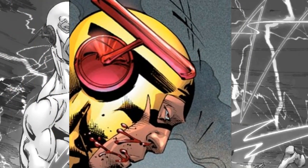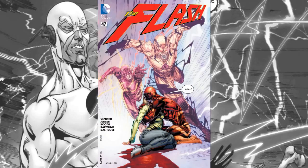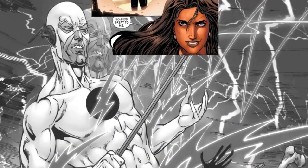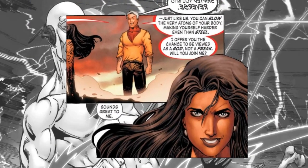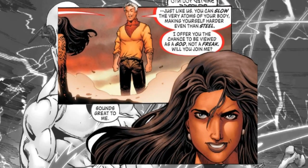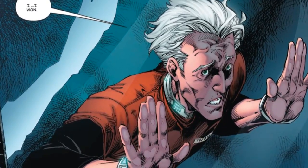After this apparent death, Thawne wasn't seen again until the New DCU, where he appeared in issues 41 through 47. We find out that Thawne isn't actually fast, but rather slows down time to make himself seem faster. We also see Eobard as a genius and a master of manipulation. Flash defeats Thawne by figuring out how he moves so fast and sends him to jail.